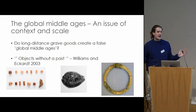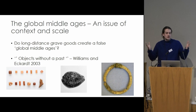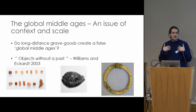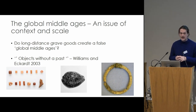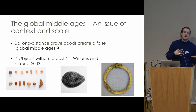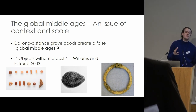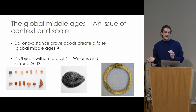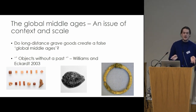What I've tried to highlight here are issues of context and scale. I want to go back to my central question: do we create a false global middle ages for ourselves with this bird's eye view of where all these things come from, in comparison to where the people using and living with these things think they're from? I think if we look at the idea of objects without a past, maybe there's some explanation there — are these objects without a location, objects without an origin, where actually it just looks really nice, so I'll have it?